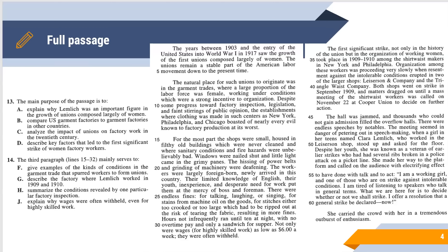Number 13 asks you about the main purpose of this passage, and the answer is D: to describe the key factors that led to the first significant strike of women factory workers. The poor conditions described earlier in the passage result in an eruption of protests at two of the largest garment shops, and that's going to lead to some unionization and lead to a strike.